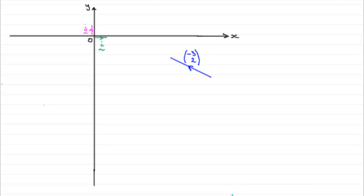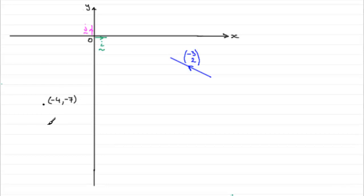Now what do we know? We know that this particle P is at the point (-4, -7) when t equals six. So if we go four units to the left and seven units down, it's at this point here. Let's mark on minus four, minus seven when t equals six.